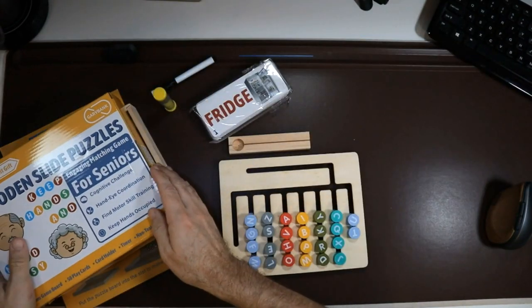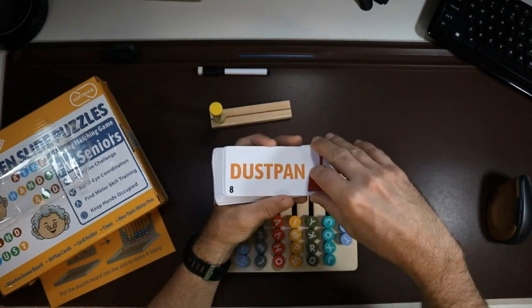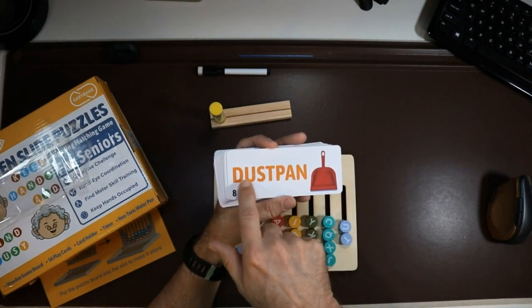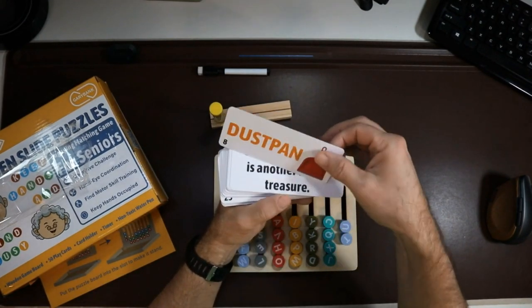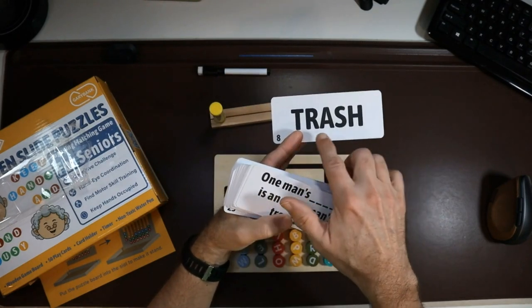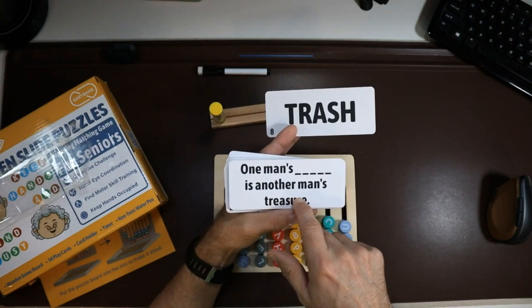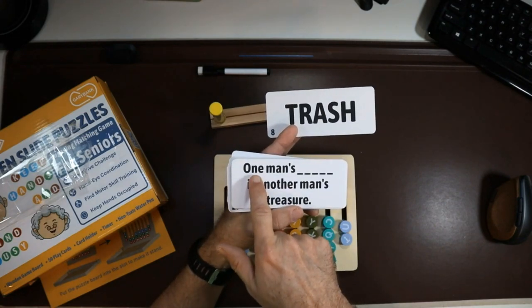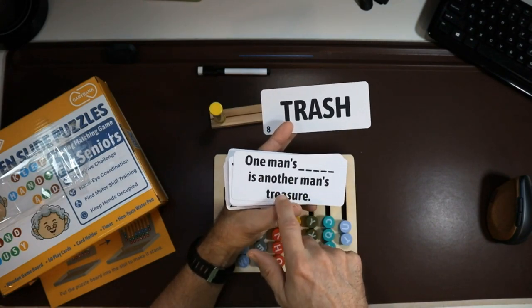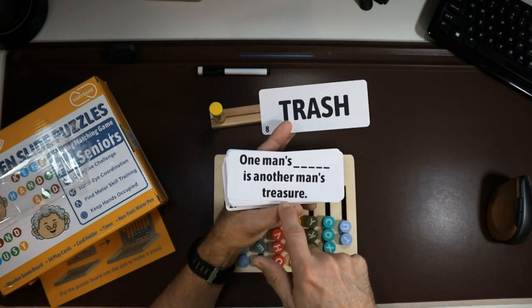So these are the game cards. I like that they use nice, big, plain font and bright colors. Some cards have just the word itself, and then these cards are Proverbs cards. Like this one is one man's blank is another man's treasure. Of course, one man's trash is another man's treasure.